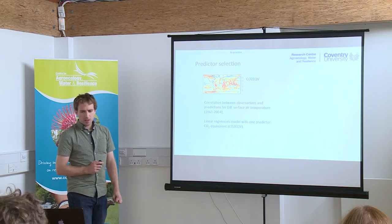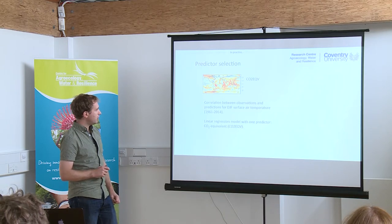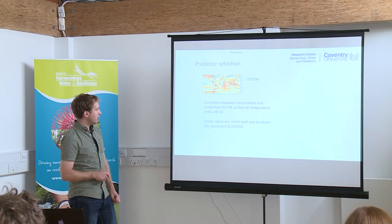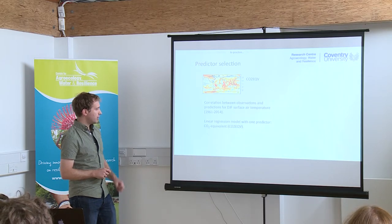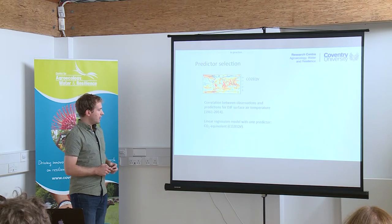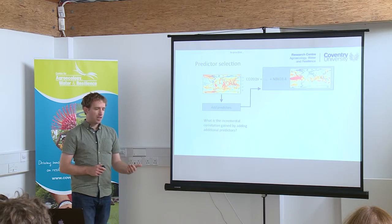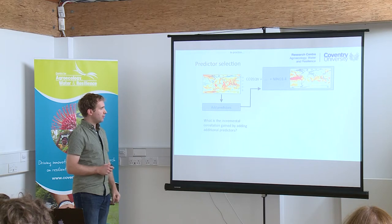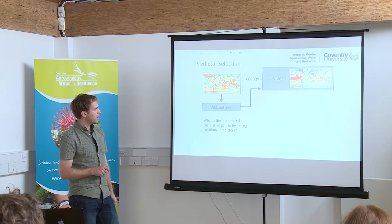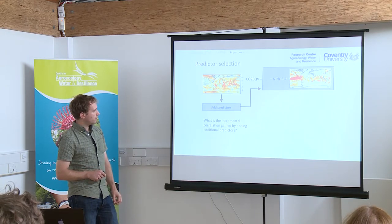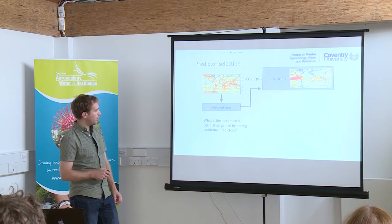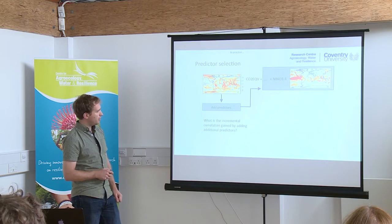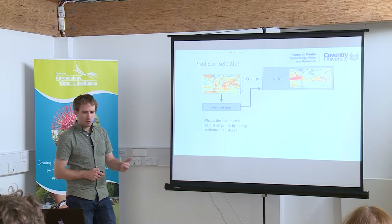This demonstrates how the predictor selection is done. It shows correlation between observations and predictions for December-January-February temperature using CO2 equivalent as a predictor for the long-term trend. We then look at the incremental skill gained by adding additional predictors — each predictor has the climate change signal removed from it. The most important mode of variability is ENSO, so it goes first. After ENSO, we look at PDO with the ENSO signal removed — there's not much left in most cases other than the North Pacific region where PDO is notable.